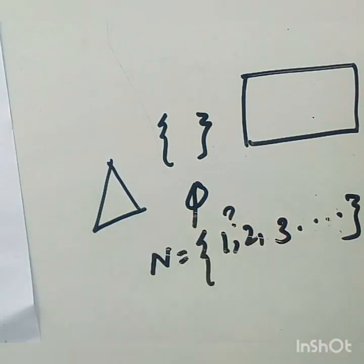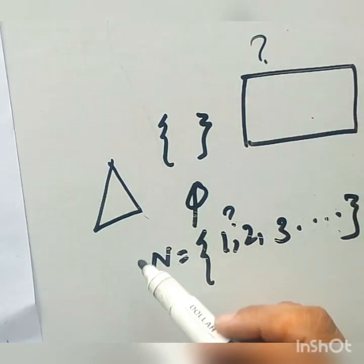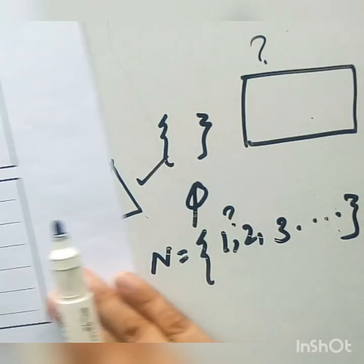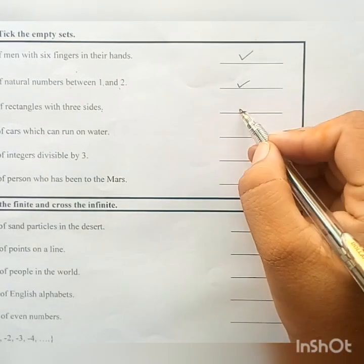3 sides are in triangle. When any figure has 3 sides, it will no more be a rectangle. It will become a triangle. So a set which has rectangles with 3 sides is an empty set.